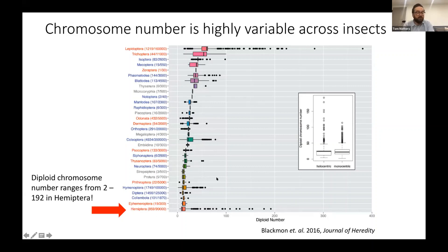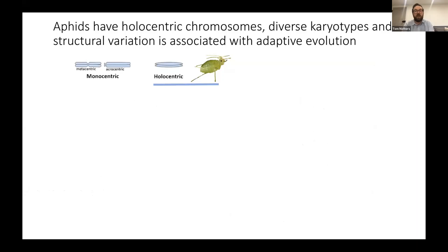There's really quite striking differences that can be found, and of course there are lots of cool things we can only look at now that we can quickly and easily assemble high quality chromosome level assemblies with long reads and other scaffolding technologies. I'm going to take a couple of slides to try and persuade you why I think aphids are a great system to look at chromosome evolution in insects.